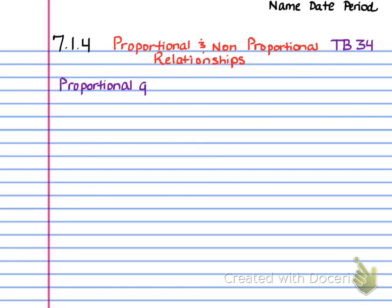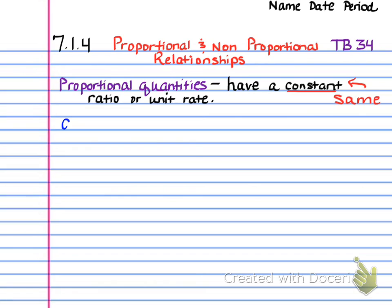So now we're going to see the first two words here are going to be vocabulary words. Proportional quantities mean they have a constant ratio or unit rate, meaning the same. And remember, a unit rate has a bottom denominator of 1. So we have the cost of order and then we have pizzas ordered.